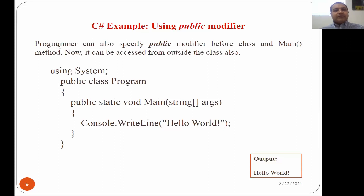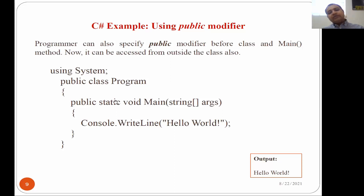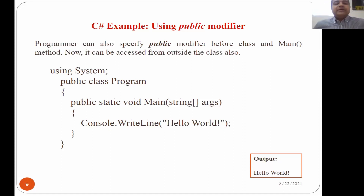Using the public modifier, a programmer can specify public before a class or main method, making it accessible from outside. If you use public with a class, you can access it in a different namespace. If you use public with a method, you can access it in the same namespace from a different class. By default, if you don't specify public, it is private — and private members cannot be accessed outside the class or namespace.